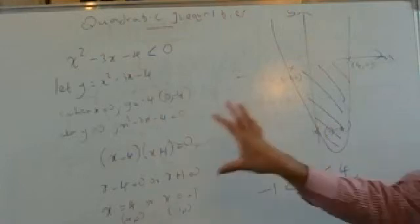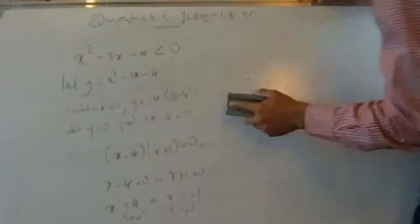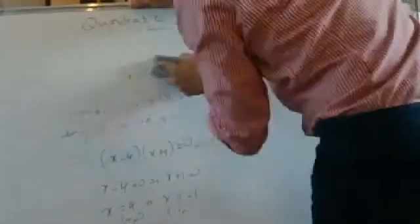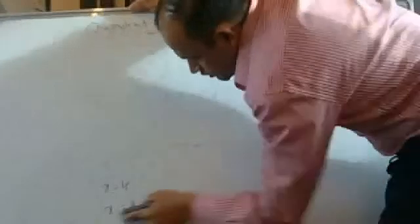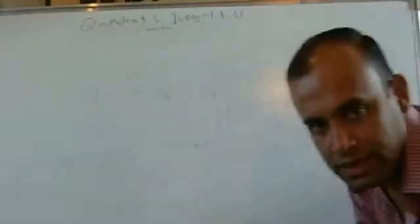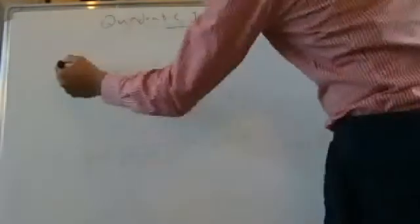So now let's do one more example — you can pause the video and copy this down. When they give you a quadratic inequality, your goal is not just to solve a quadratic inequality. Your goal is to show the examiner that you are capable of solving a quadratic equation, sketching a quadratic graph, and simplifying algebra. If you just do this using algebra alone, you won't be given full credit — you need to show it on a diagram.